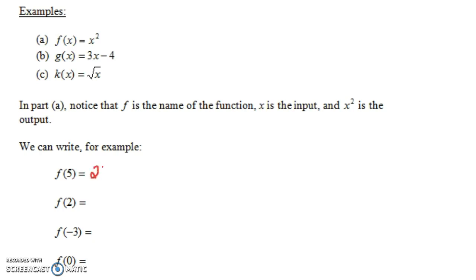And notice f of 2 would be 2 squared which is 4, and f of minus 3 would be minus 3 squared which is positive 9—minus 3 times minus 3 is positive 9—and f of 0 would be 0 squared which is 0.